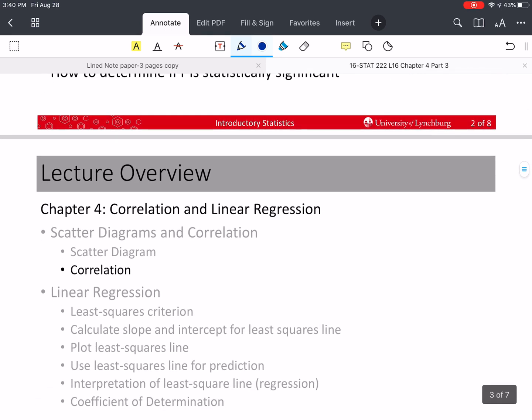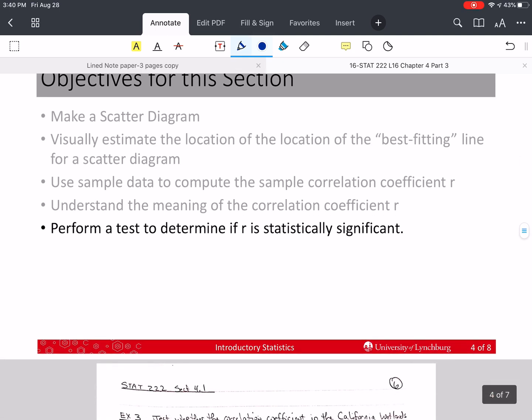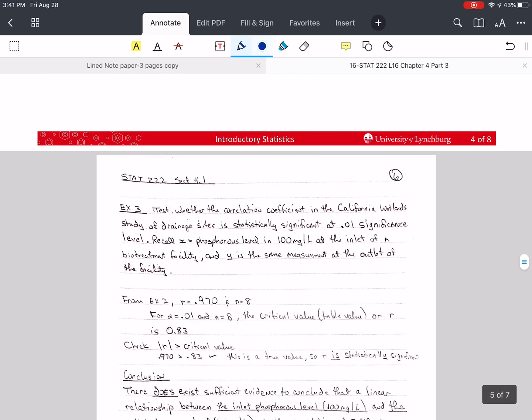And we are starting on how to determine if R is statistically significant. We started on that. We're going to actually finish that. And we're continuing on in correlation. The objective we're trying to do today, of course, is perform a test to determine if R is statistically significant.